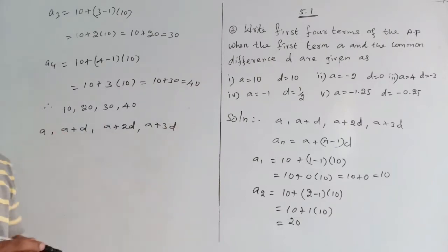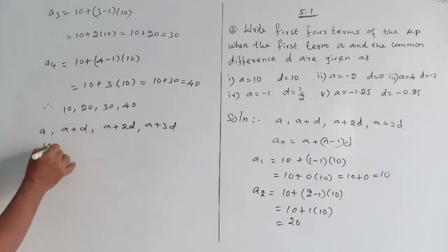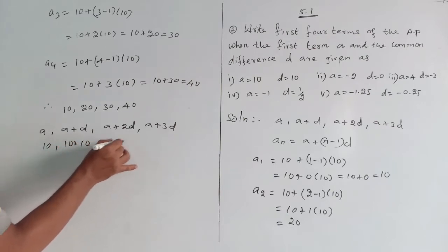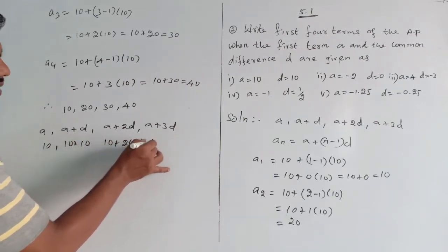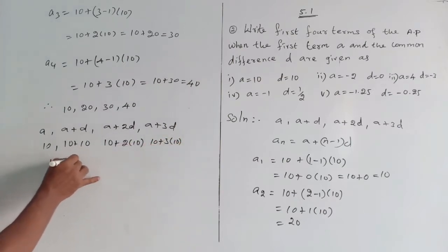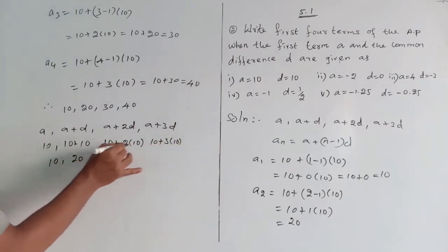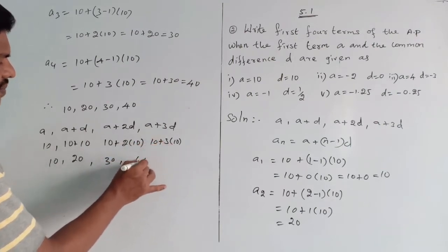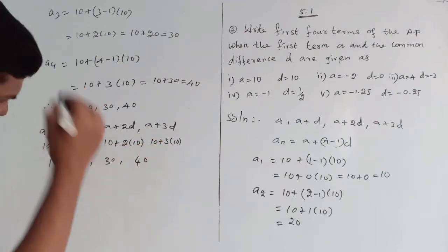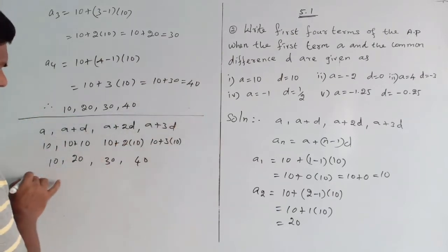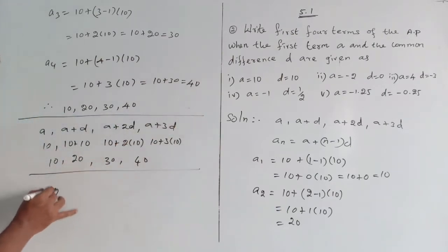So the first term is 10, second term is 10 plus 10 which equals 20, third term is 20 plus 10 which equals 30, and fourth term is 30 plus 10 which equals 40. This is the direct method — shorter and easy for 1 mark questions. The common difference here is 10.